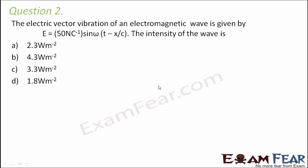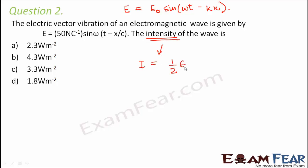Question number 2. The electric field vibration of an electromagnetic wave is given by E = 50 N/C · sin(ωt − x/c). In general, we express the electric field as E = E₀ sin(ωt − kx). We have to find the intensity. The intensity formula involves epsilon naught, which has value 8.85 × 10⁻¹² C²/(N·m²).